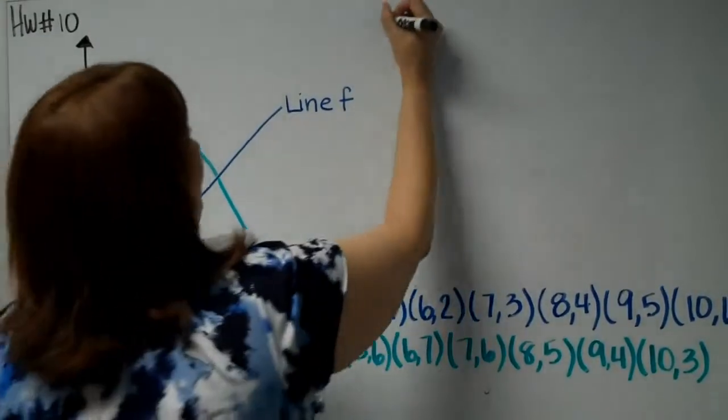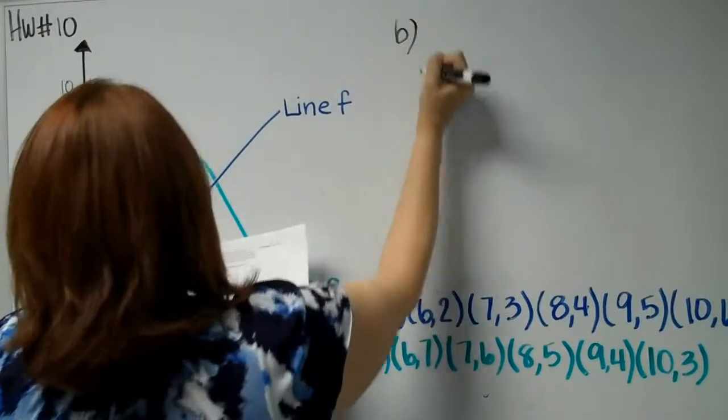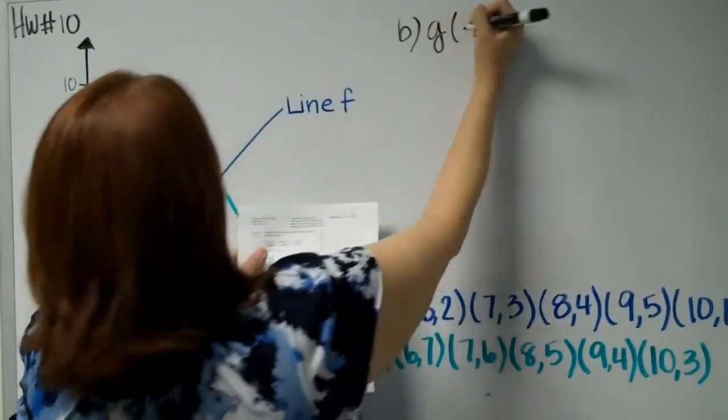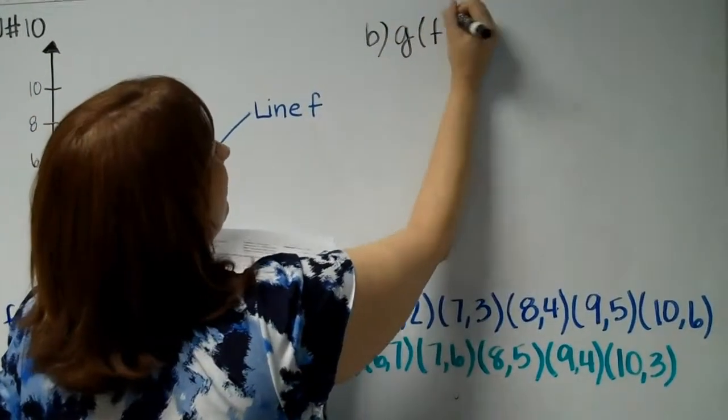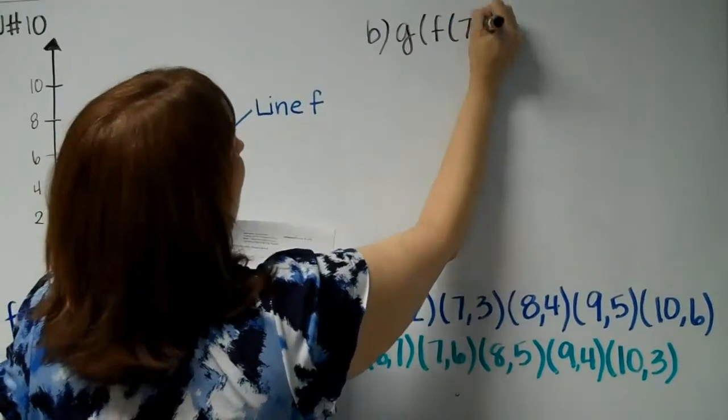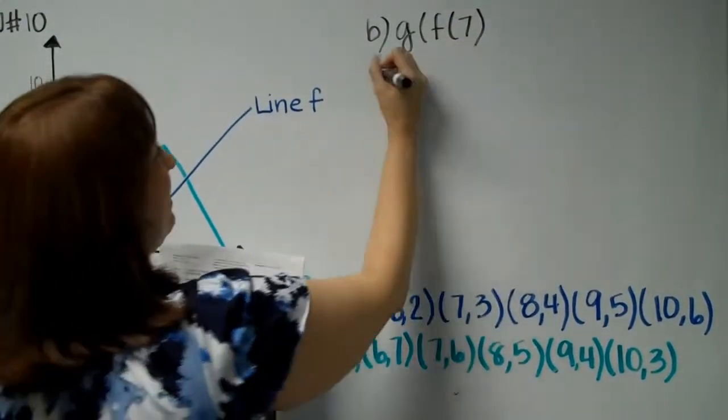Now for letter B: What is G of F of 7? So what do you have? You have F of 7.